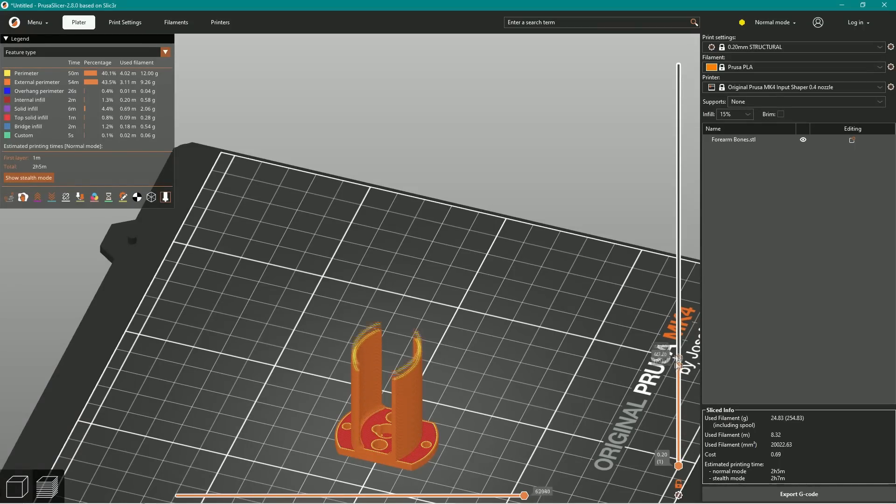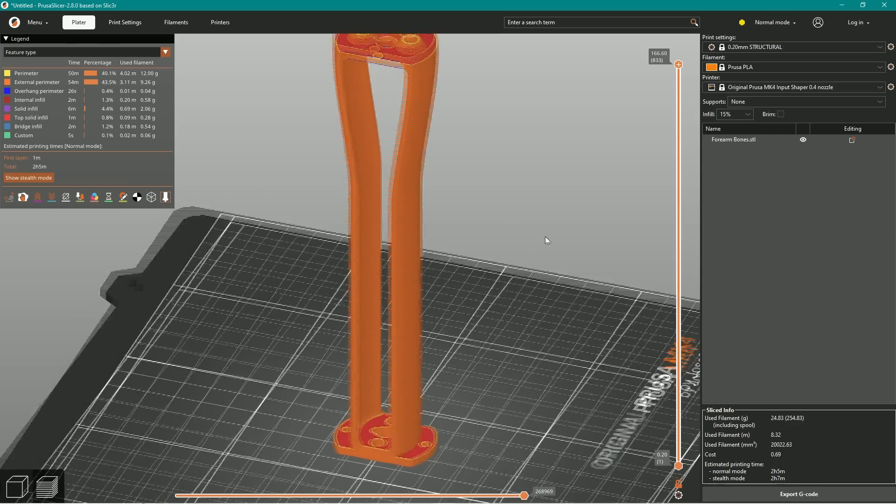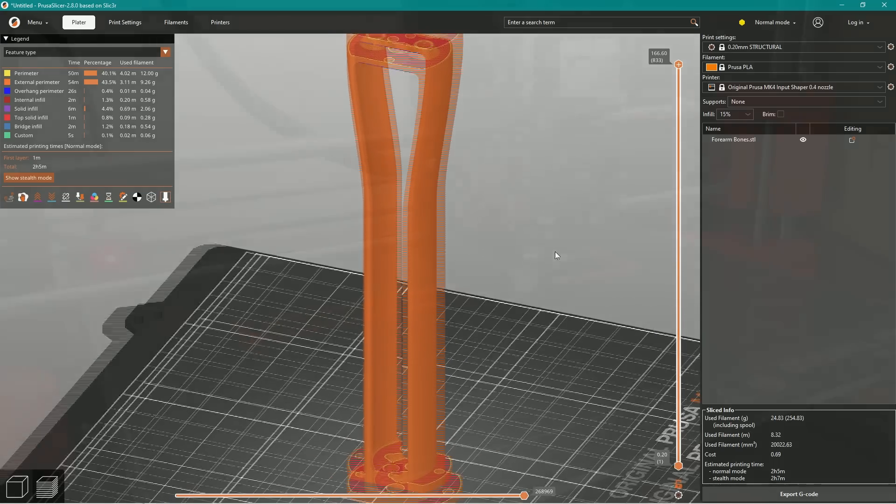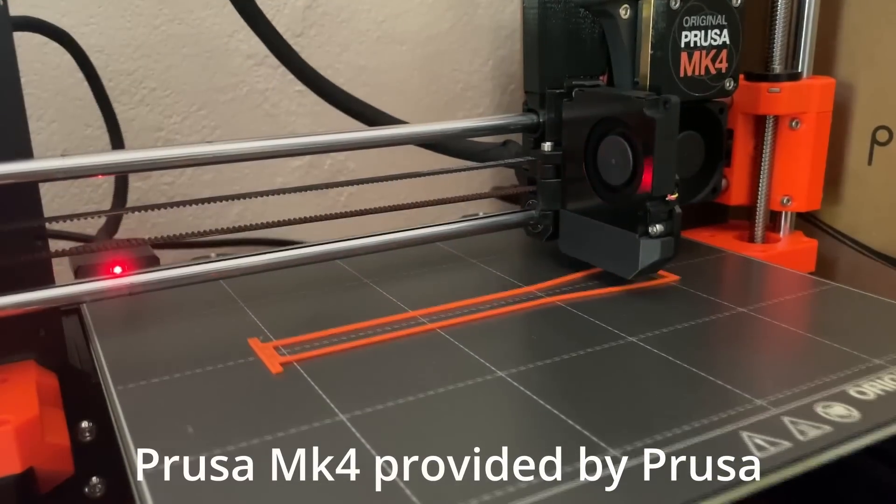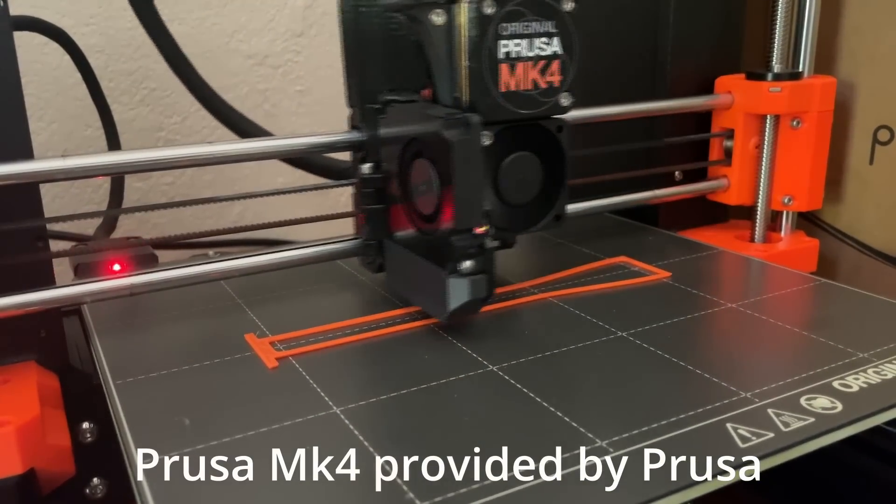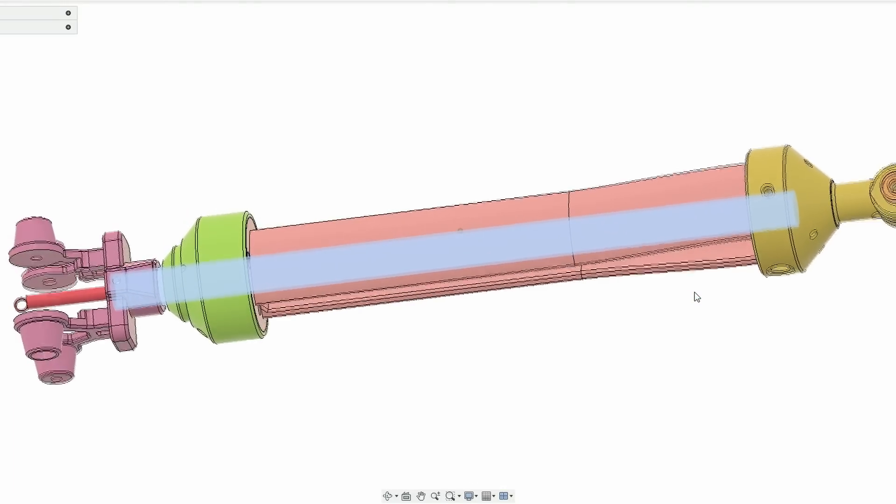For some reason, in V1, I kept printing the forearm bones in a vertical orientation, which was obviously weak. But I flattened out the sides and printed it out lengthwise. Thanks for the printer, Joe. So now they're incredibly tough, which means the bones can handle the weight of the hand.